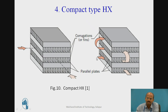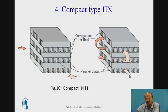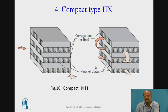Multiple passes are also possible in compact heat exchangers: cold fluid flows in one direction, moves to the next row, and continues through subsequent rows — first pass, second pass, third pass. In this way, compact heat exchangers provide the largest heat exchange within a given size limit.